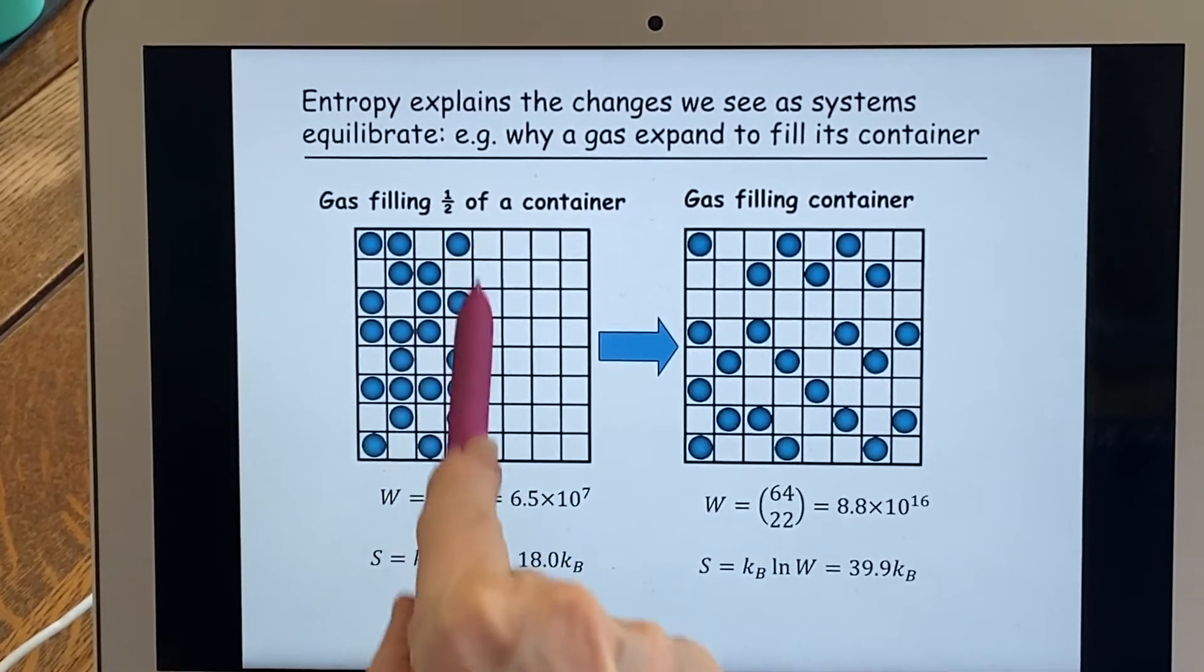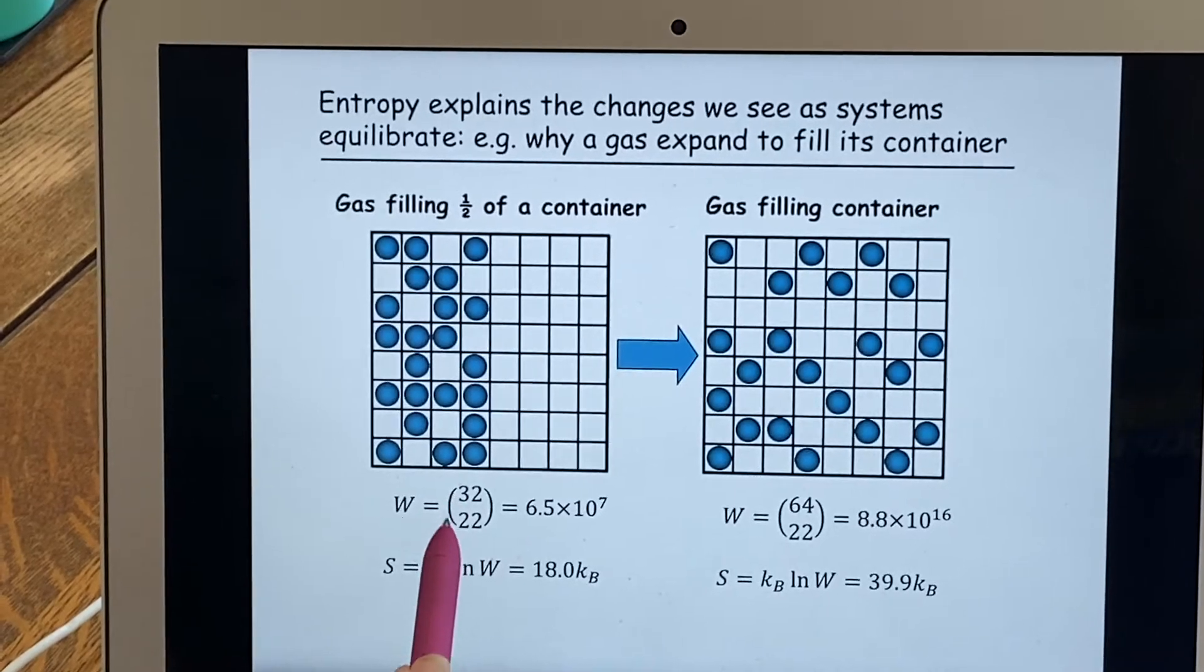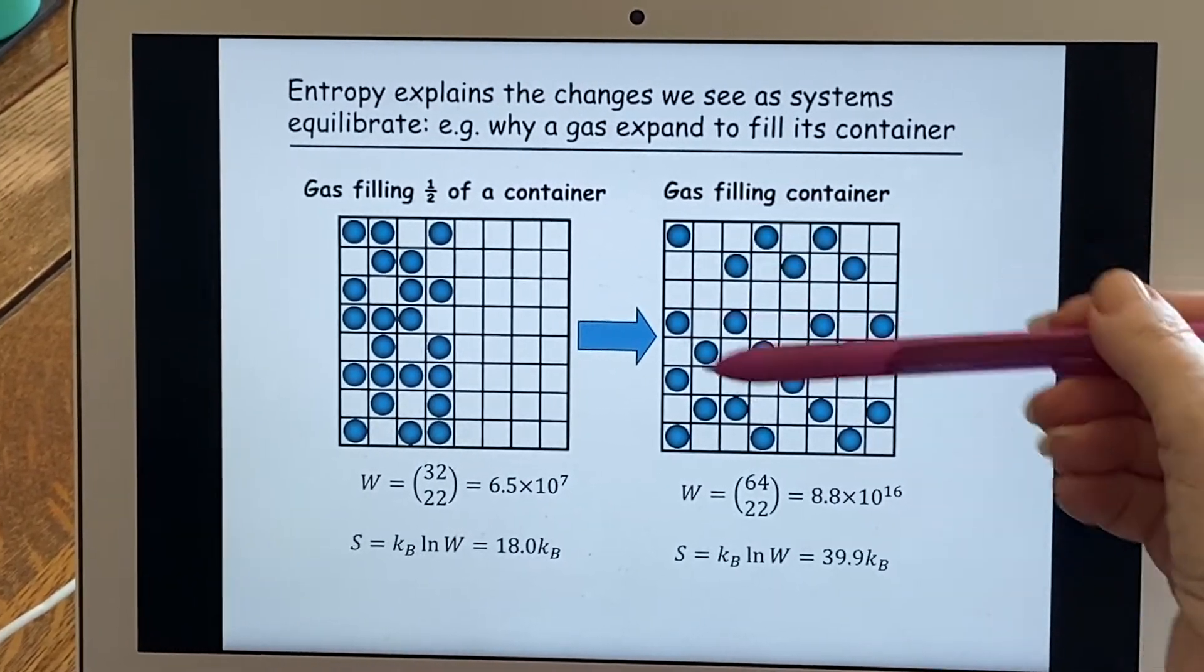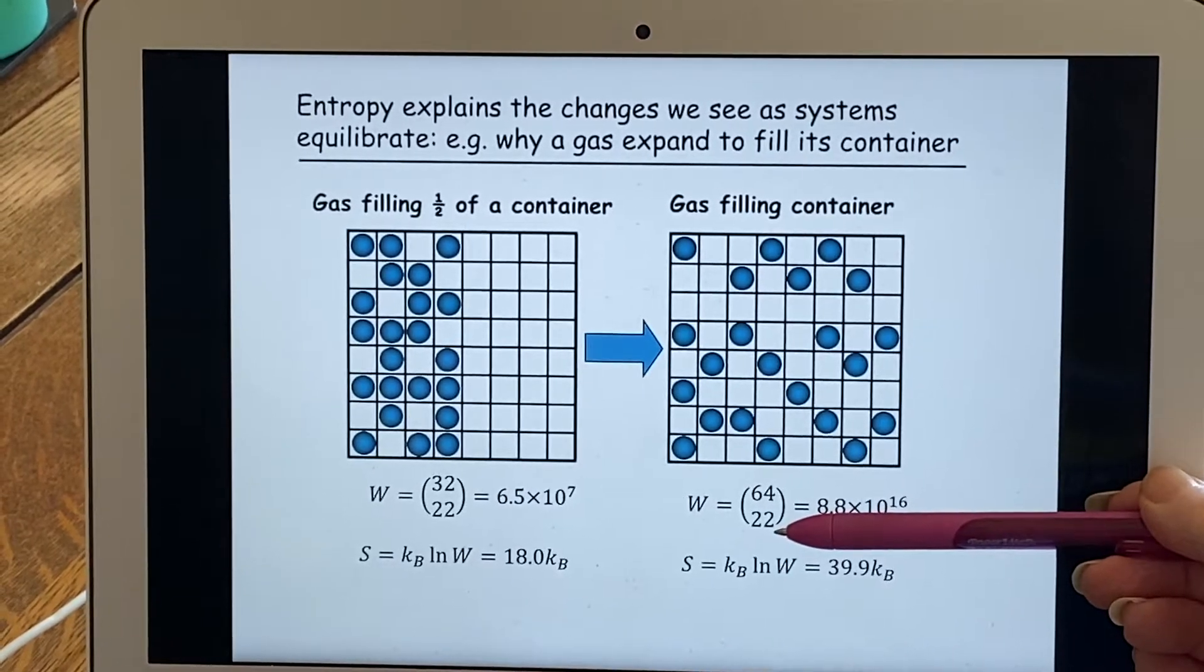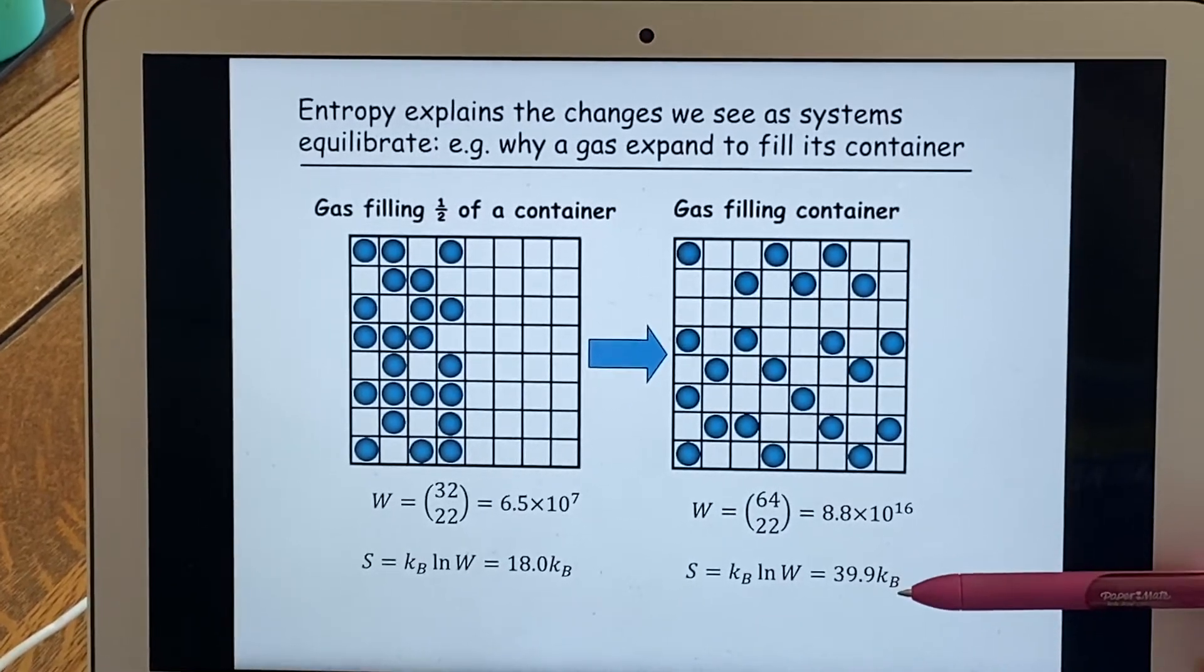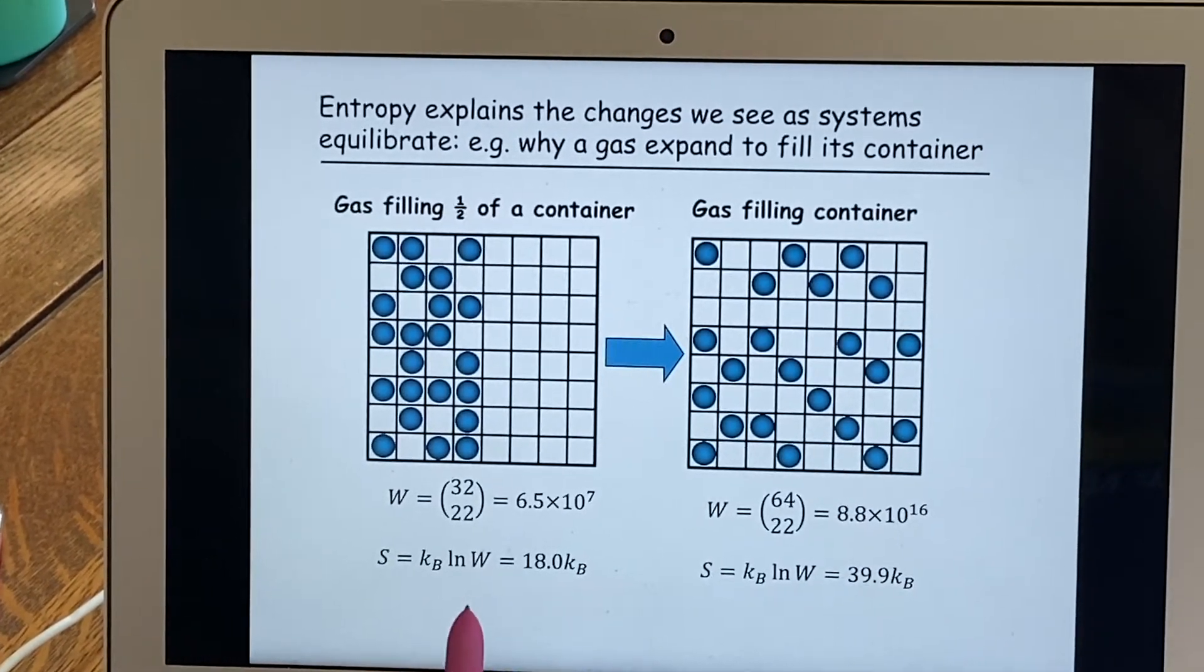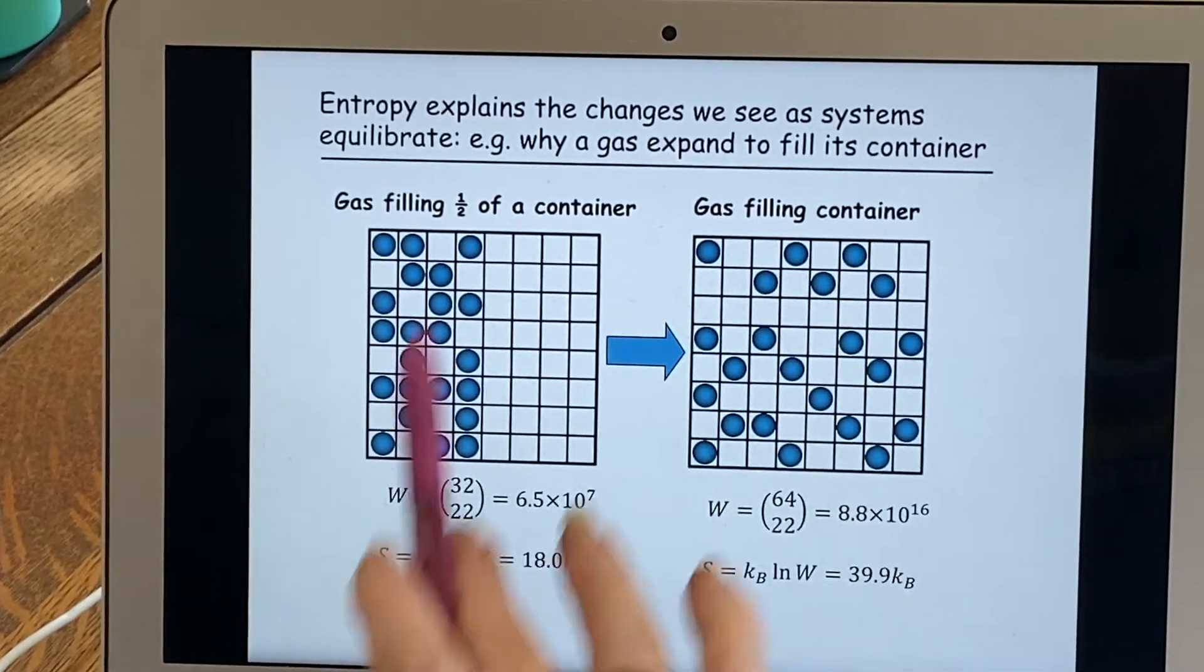If the gas was only in half the container, then there would only be 32 possible places it could be for these 22 items. And you would end up with this number. But if the gas fills the container, there's now a lot more places it could be, still the same number of particles. We end up with a different value of W and we see that S is larger. And since it's just a natural law of the universe that entropy increases, of course it's going to do this because entropy increases if it fills the container.